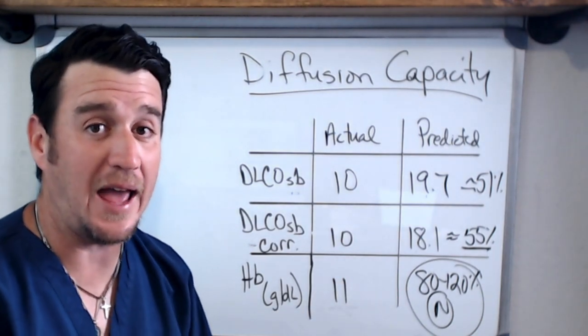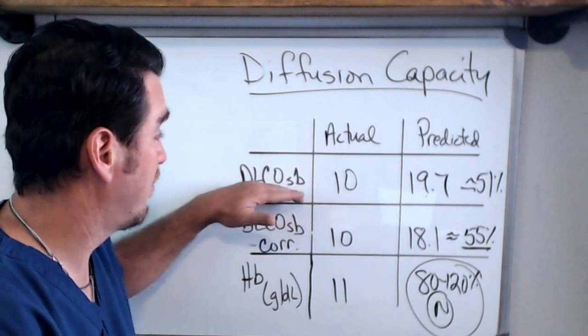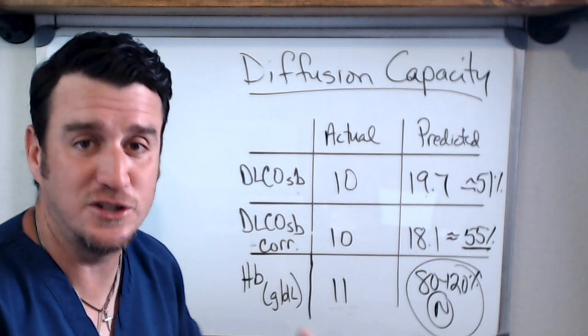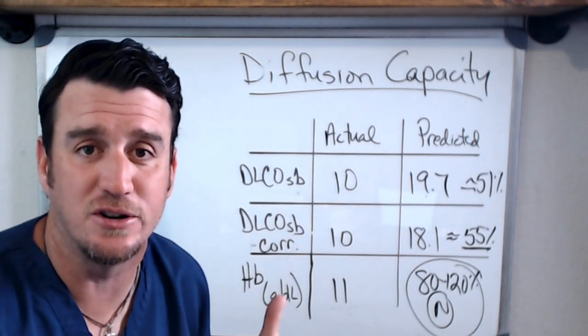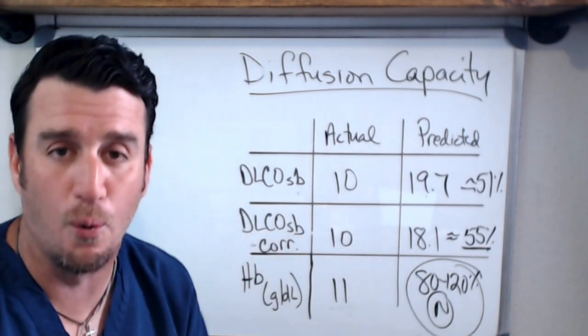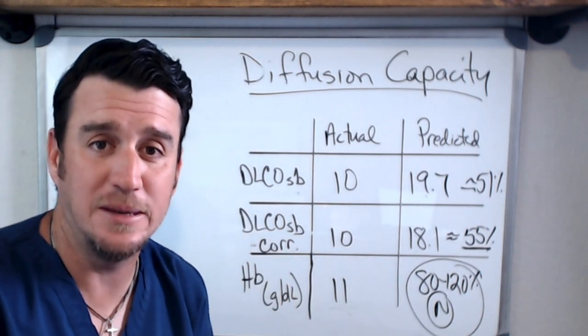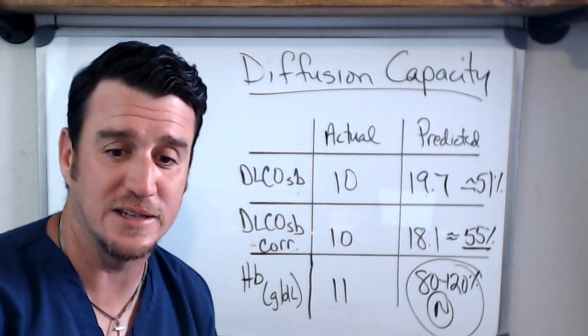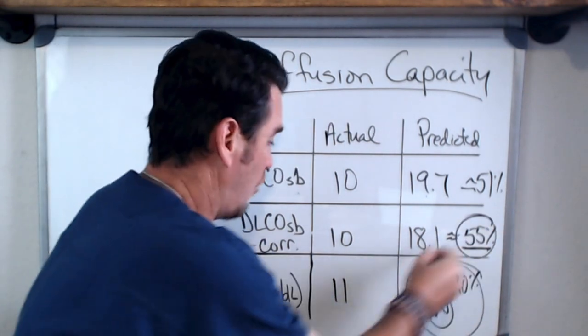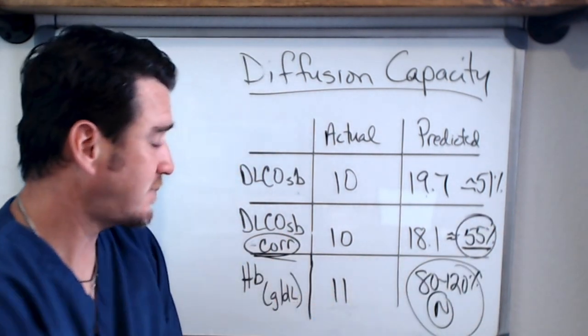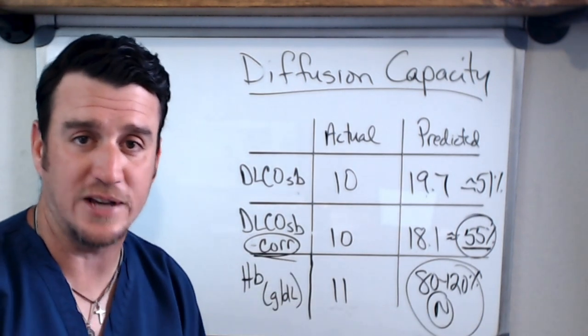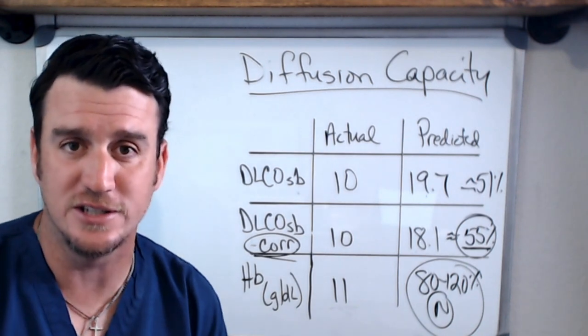If you ever have an abnormal DLCO single breath that's uncorrected and a normal for corrected, you're always going to take the corrected value. Which is why it signifies the importance of knowing your hemoglobin prior to performing this test. Now this person has a 55 percent, this is the one we're taking, why? Because it's corrected. 55 percent is their diffusion capacity.